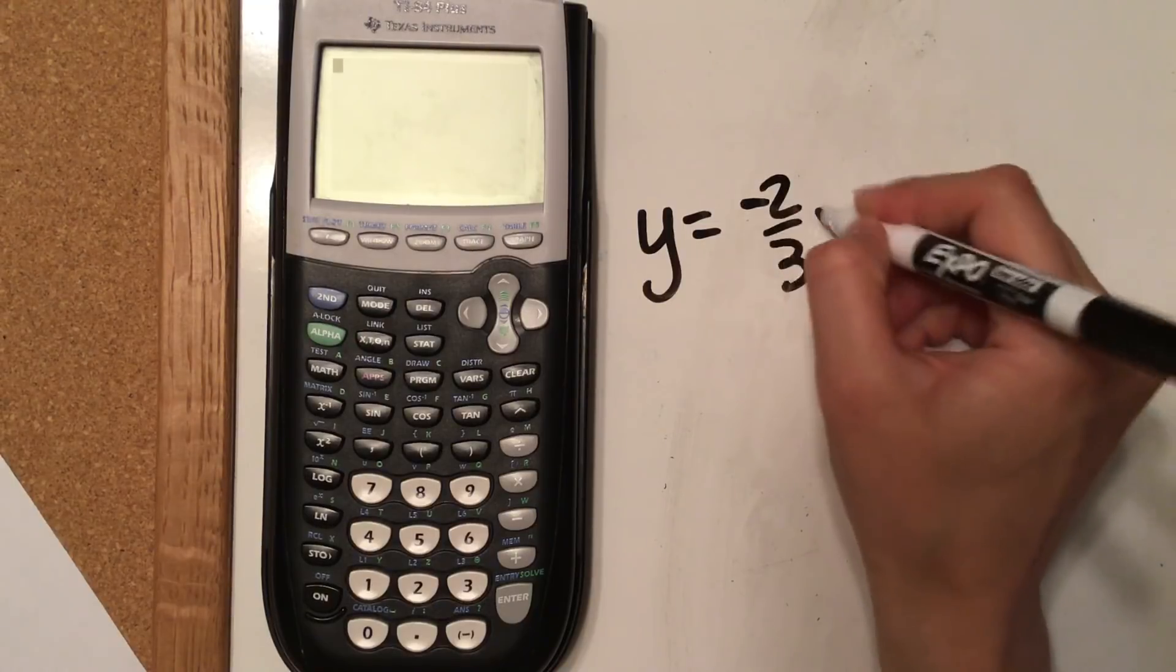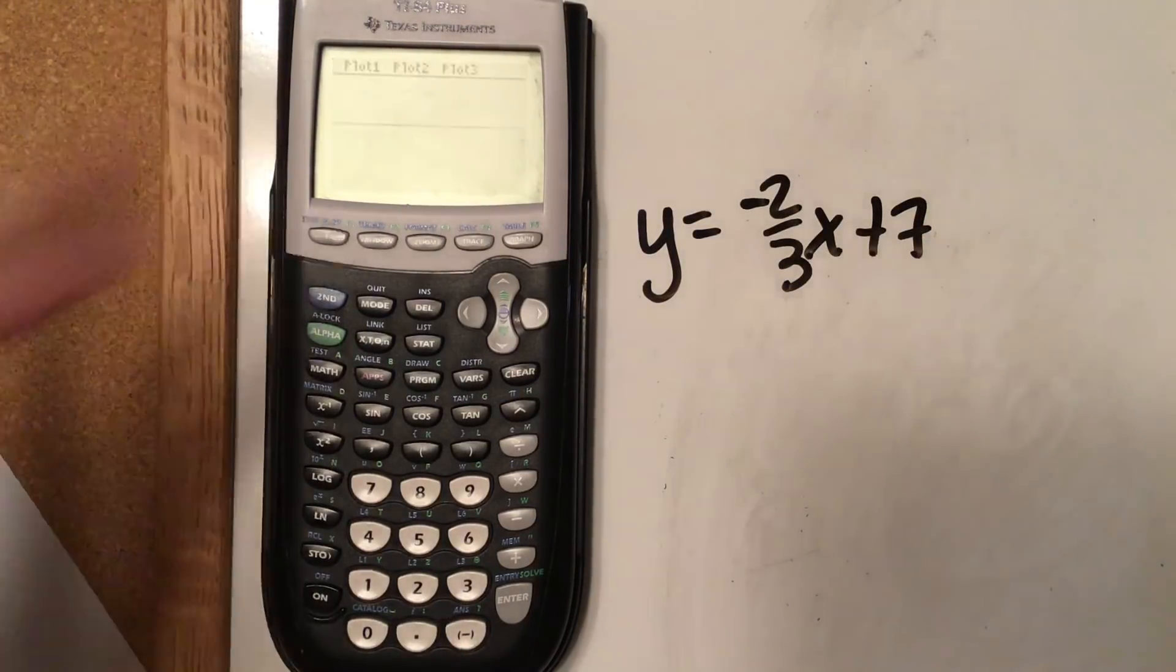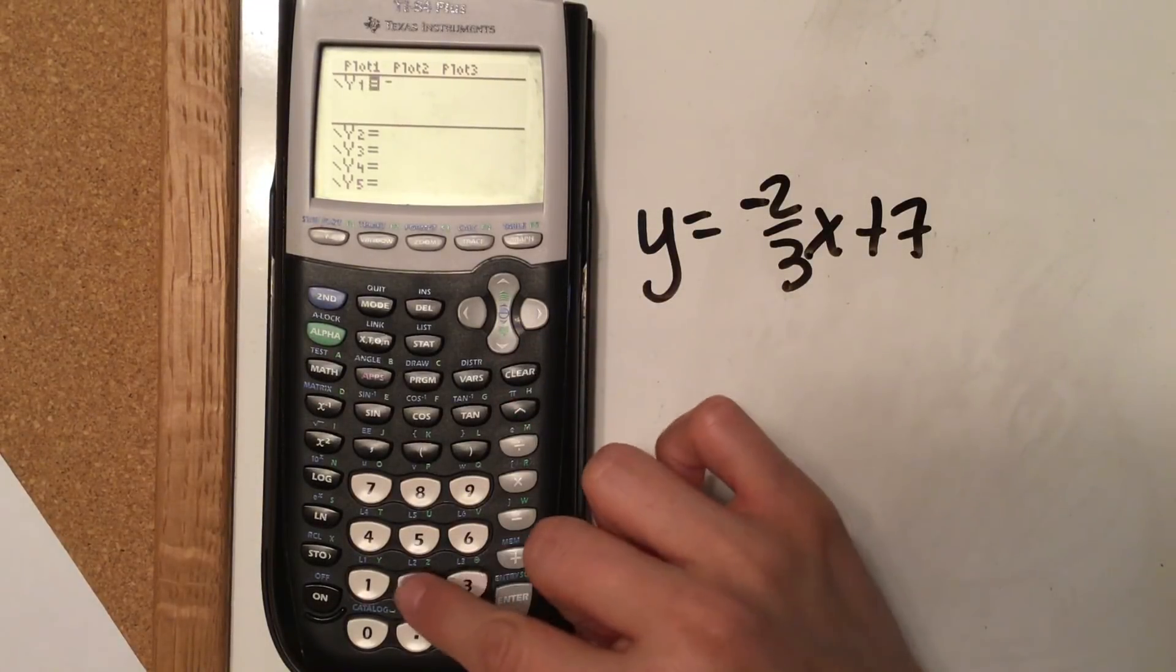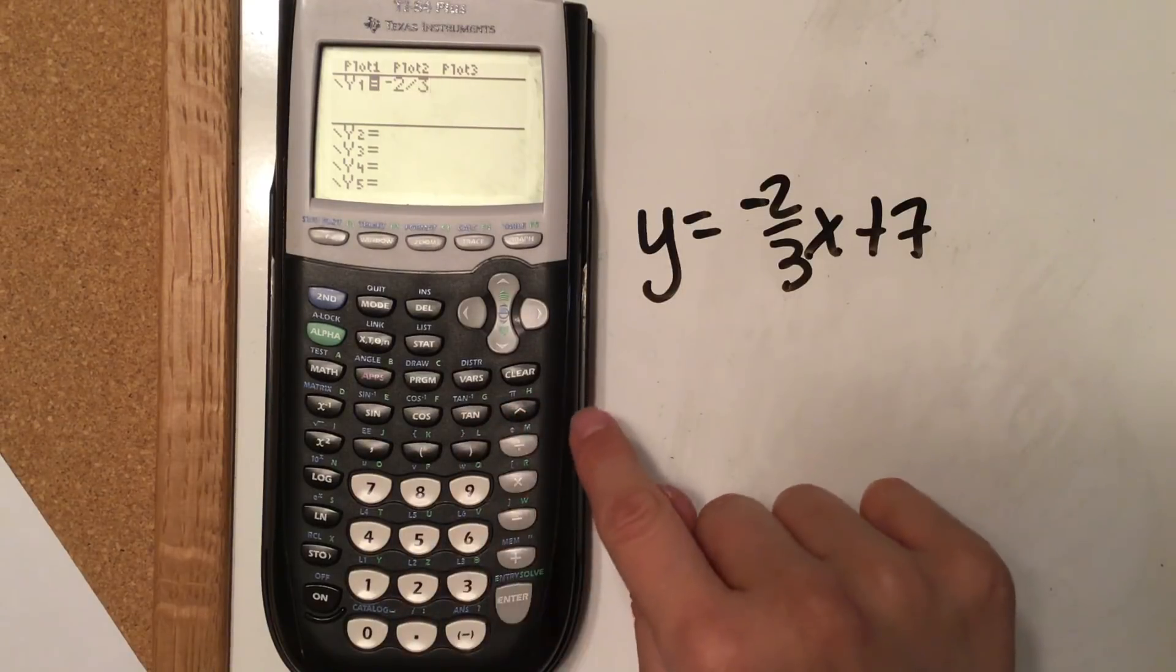So if I gave you negative two-thirds x plus seven, we're going to go into our graph, into y equals. Whatever's there, you can clear it out, so we're going to do negative. Notice I'm using the negative, not the subtract, two-thirds x.